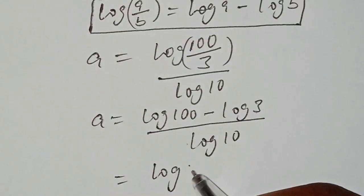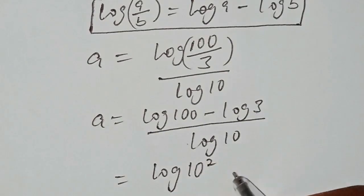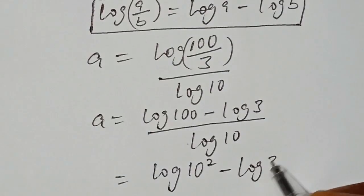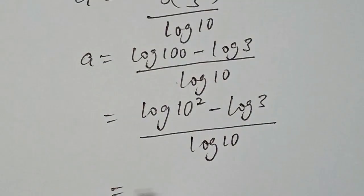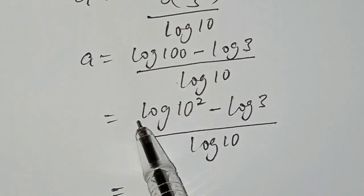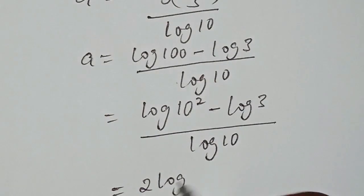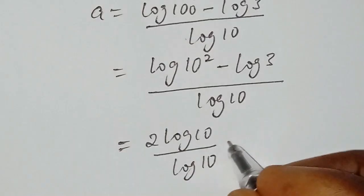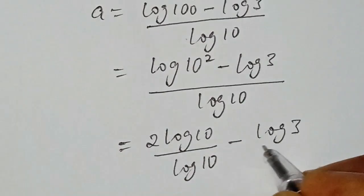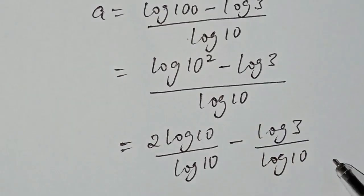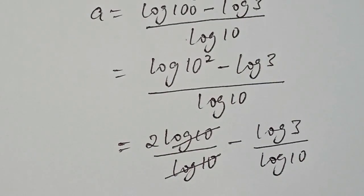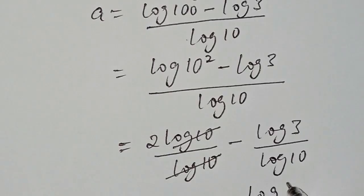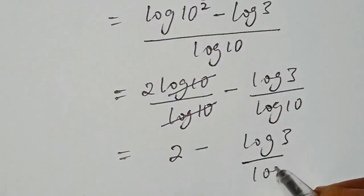We can write log of 100 as log of 10 to the power of 2, minus log of 3, all over log of 10. Splitting the fraction: 2 times log of 10 over log of 10, minus log of 3 over log of 10. The log of 10 over log of 10 terms cancel, leaving us with 2 minus log of 3 over log of 10.